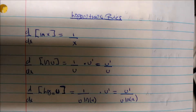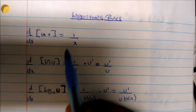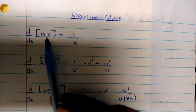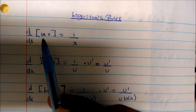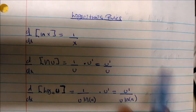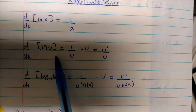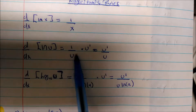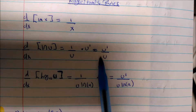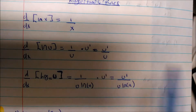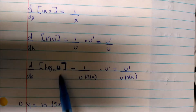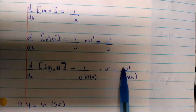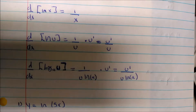Logarithmic differentiation rules — we're talking about derivatives of log functions. Let's go over a couple of rules. The derivative with respect to x of ln(x) is just 1/x. The derivative with respect to u of ln(u) is u prime over u. The derivative of log base a of u is u prime over u times ln(a). With that being said, let's jump into a couple of problems.